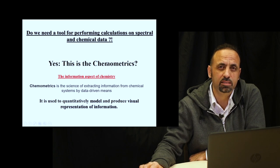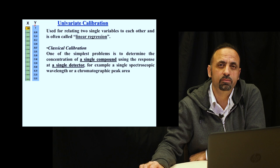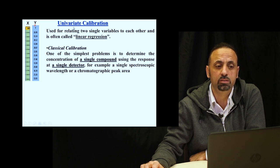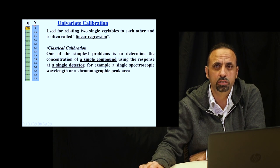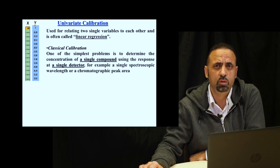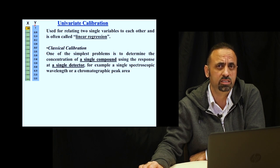There are plenty of different tools that we can use for analyzing our data. One of the simplest ways to make a calibration or a prediction of a certain attribute in a sample is using univariate calibration. Univariate calibration uses only one variable — spectral data at only one wavelength — to have absorbance, reflectance, or transmittance at only one wavelength.